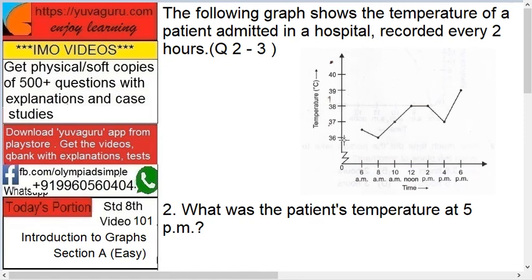It covers 12 hours, and the temperature range is from 36 to 40, increasing by 1 degree Celsius. Now, what is the patient's temperature at 5 p.m.?